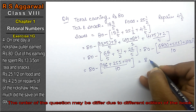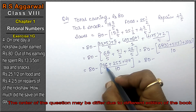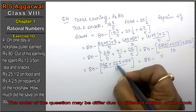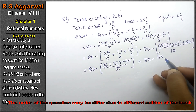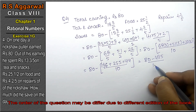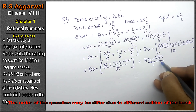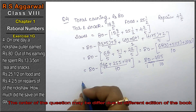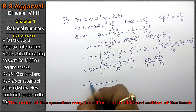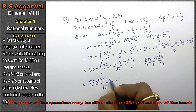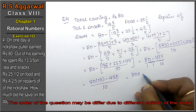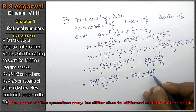So 80 minus 435/10. Adding: 6+9=15 carry 1, 4+5=9, 9+4=13 carry 1, giving 435. Now the LCM of 1 and 10 is 10. So this becomes (80×10 − 435) / 10 = (800 − 435) / 10.